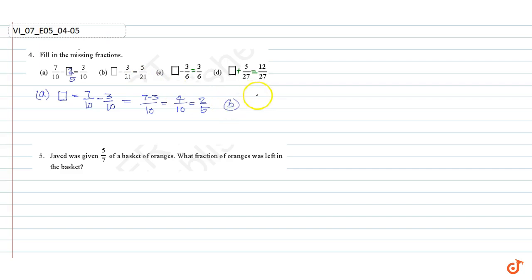Part B: missing number is equal to 3 by 21 plus 5 by 21 equal to 3 plus 5 by 21 equal to 8 by 21. So here it is 8 by 21.